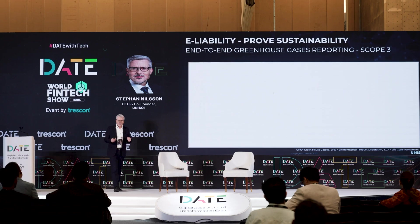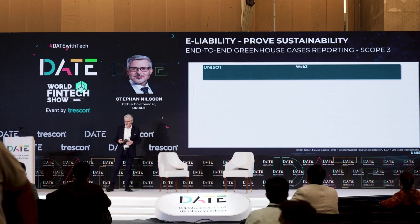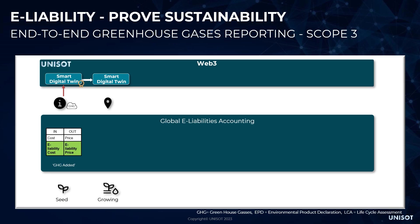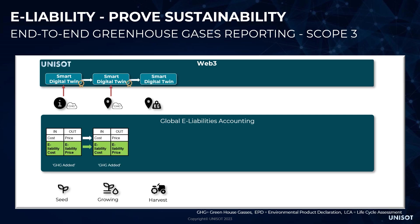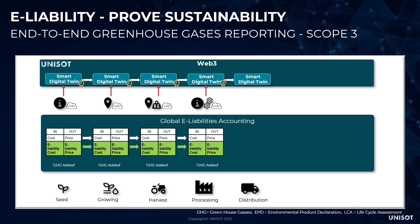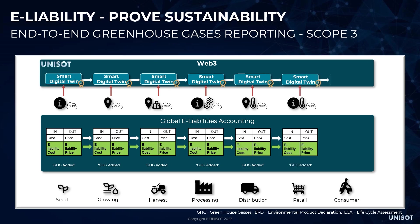All of this functionality is not just for traceability — it's also very useful for e-liability and sustainability reporting like Scope 3. The same way we trace products, we can trace how much energy, waste, and water each company uses in the supply chain. In the end, we can create very specific and exact reports: Scope 3 reports, EPD reports, life cycle assessment reports. Most of these reports today are just estimations, but with this technology we can make them very specific and exact.